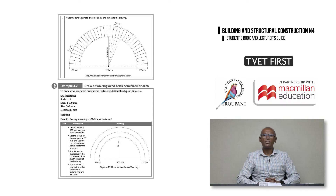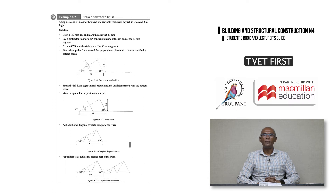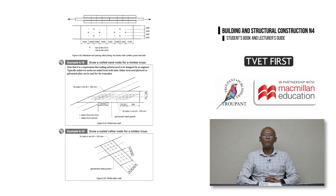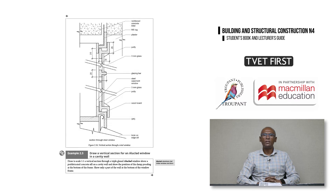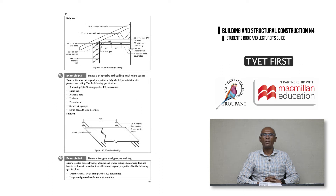Examples of step-by-step instructions can be found in module 4 on arches, where students are guided through each step of drawing an arch. Another diagram example is drawing different roofing types in module 6. TVET First includes excellent guidelines for drawing in a series of worked examples on each type. In fact, there are more than 400 illustrations in this book to assist students with all their drawing tasks.